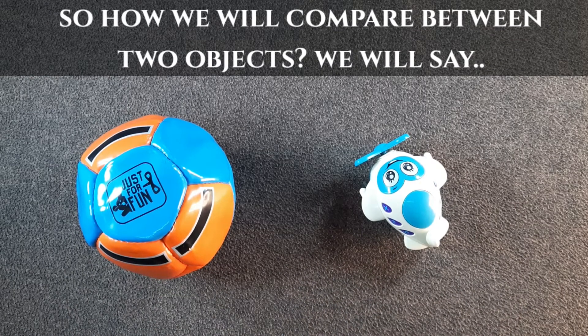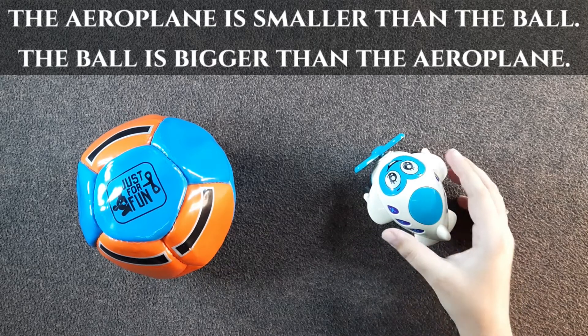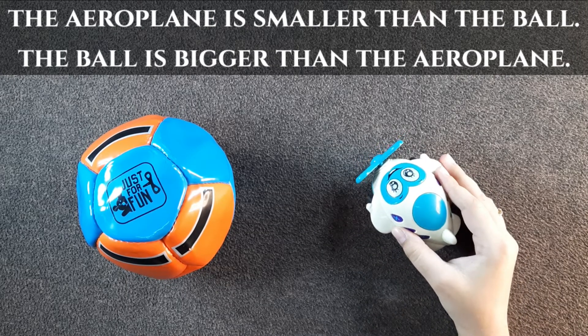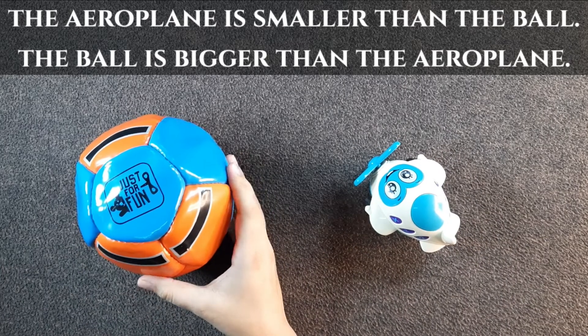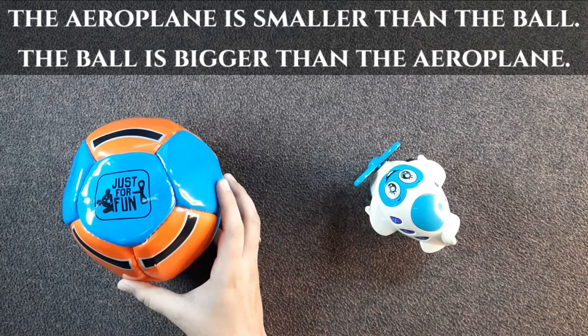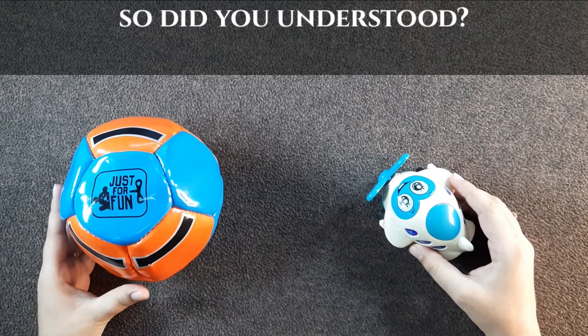So how will we compare between two objects? We will say the aeroplane is smaller than the ball. The ball is bigger than the aeroplane. So did you understand?